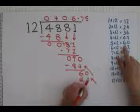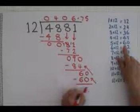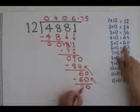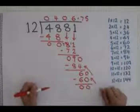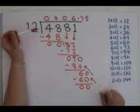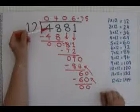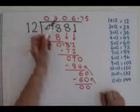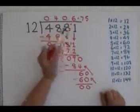5 times 12 is 60. We take 60 from 60 and we have nothing left over. So our sum is finished. The answer to how many times does 12 fit into 4881 is 406.75.